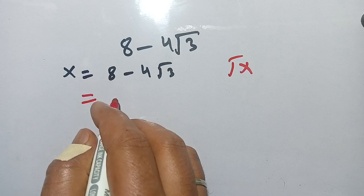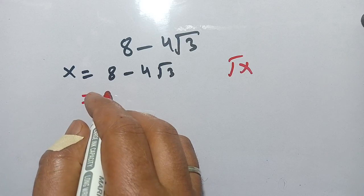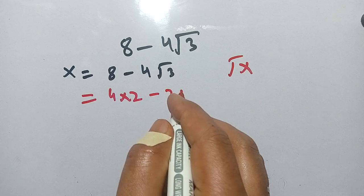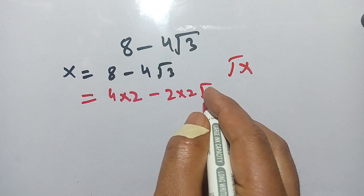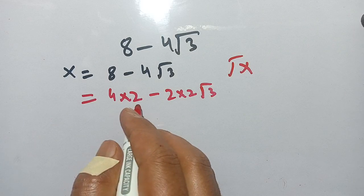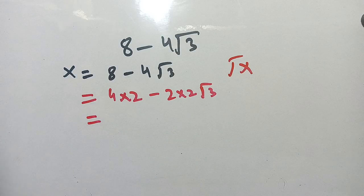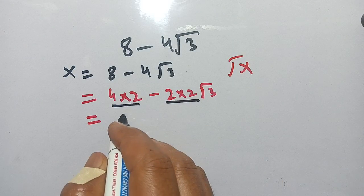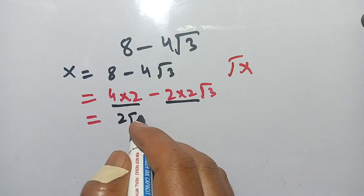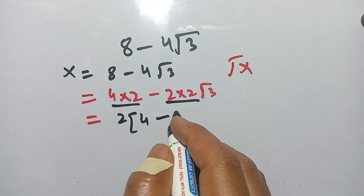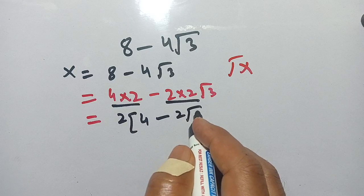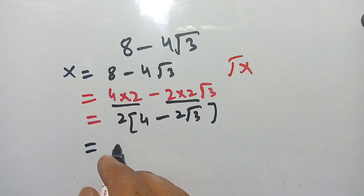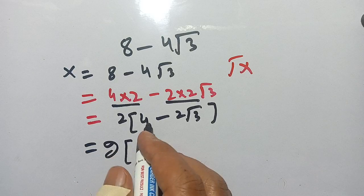Now let us solve this. 8 can be written as 4 times 2, and minus 4 can be written as 2 times 2 square root 3. Now we take out 2 from both terms — from this term as well as from this term — and we get 2 times (4 minus 2 square root 3).